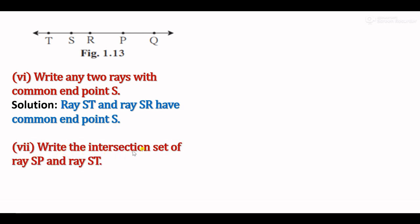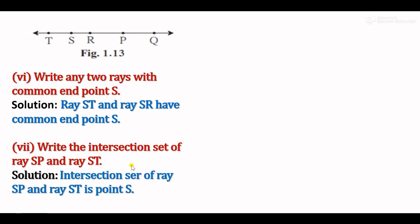Sub-question 7: Write the intersection set of ray SP and ray ST. Ray SP and ray ST are opposite rays. The common part between them is only point S. So the intersection set of ray SP and ray ST is point S.